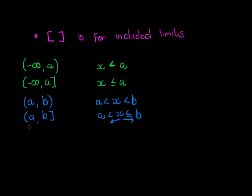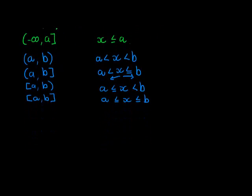It can also look like this. I can include a and exclude b. So a is smaller or equal to x or x is larger or equal to a but x is smaller than b or the other way of writing it, another possibility might be a comma b where both of them are included. Obviously this now would be a is less than or equal to x which is less than or equal to b.